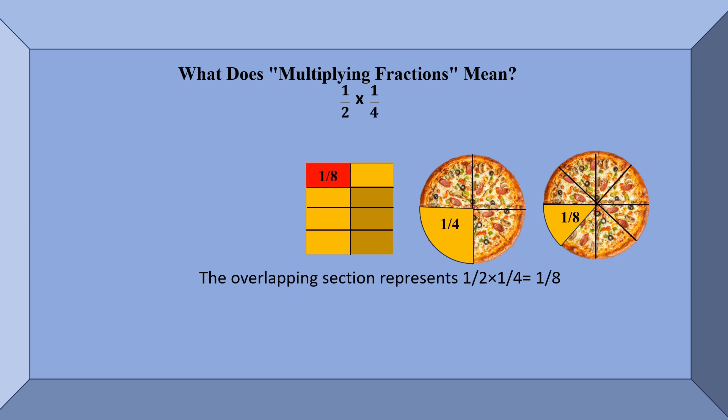Now let us try to solve this mathematically. This process can be simplified mathematically by multiplying the numerators and the denominators. So 1/2 times 1/4 is equal to 1 times 1 upon 2 times 4, which is equal to 1/8. It is that simple.